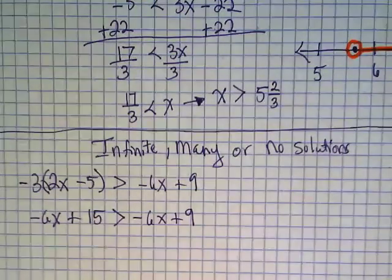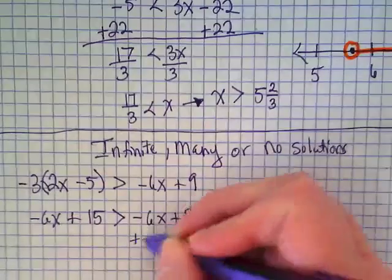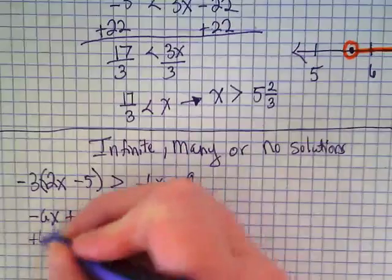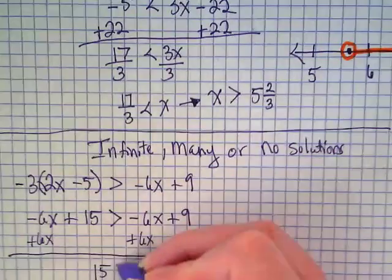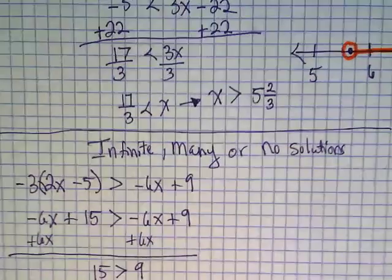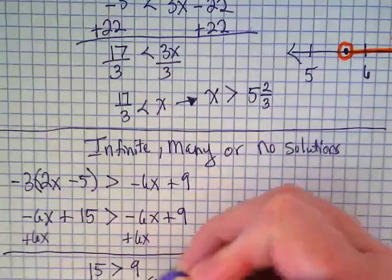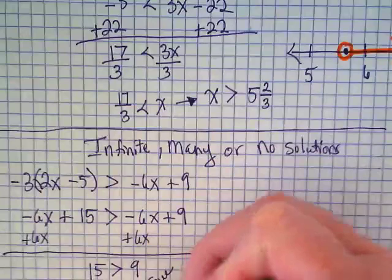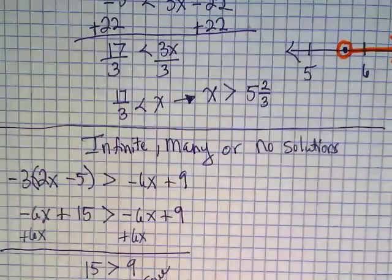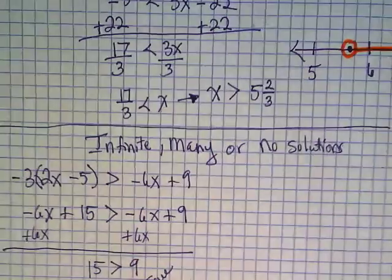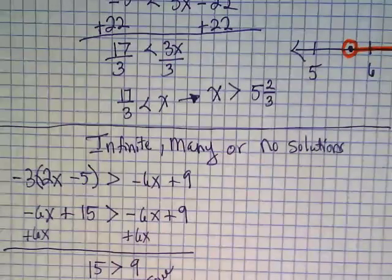Now I'm going to deal with the x term because all of the like terms are combined on each side. I'm going to add 6x to both. And I end up with 15 is greater than 9. Is that a true statement? Yeah. If it's true, that means it's infinite. Oh yeah, because the x is... That means I can pick any number in the world and plug it in for x and this inequality will still come out to be true.